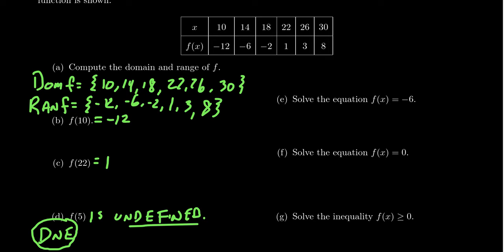So we're going to search along the bottom row of the function because that's where the f of x's are. That's the y coordinates. We can see that there's a negative 6 right here. And so this would tell us that when x equals 14, f of 14 would equal negative 6.